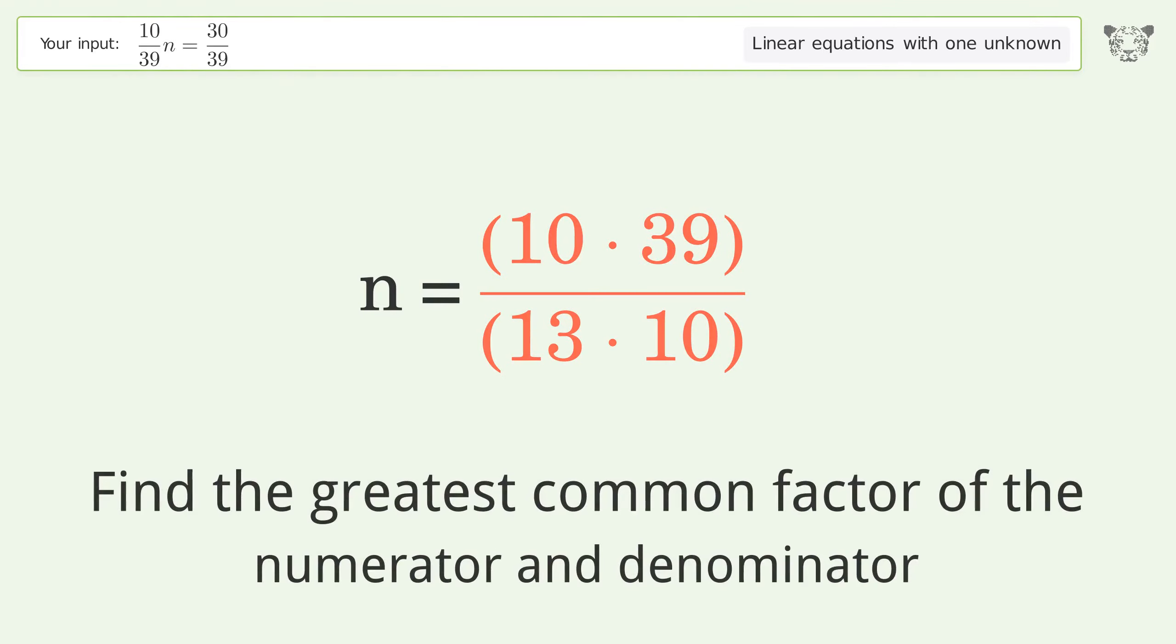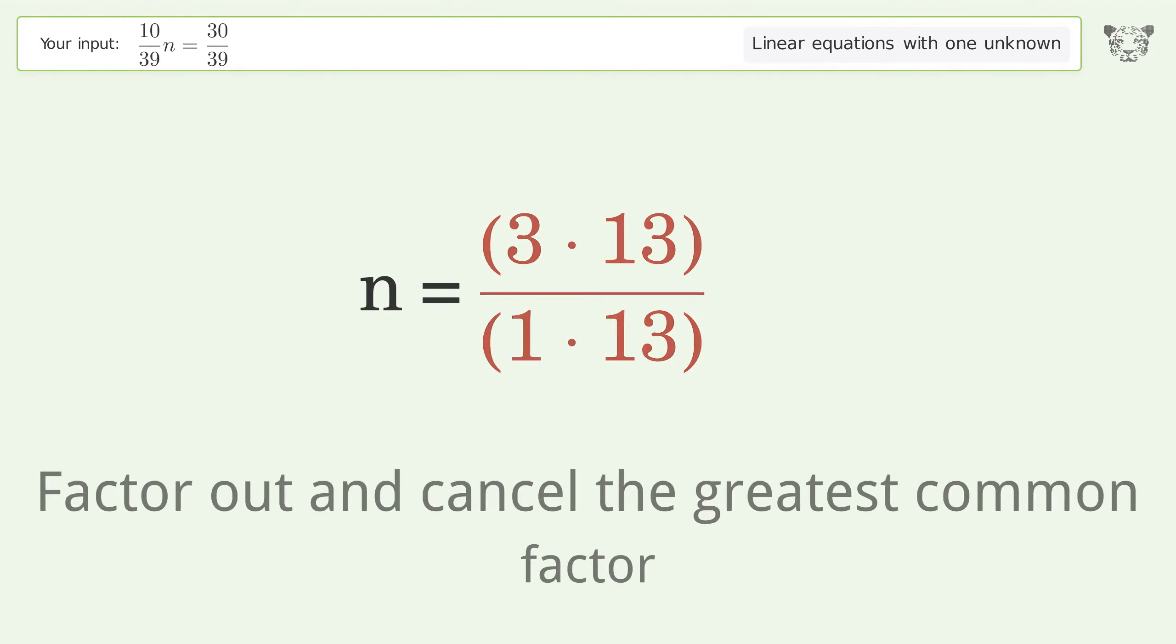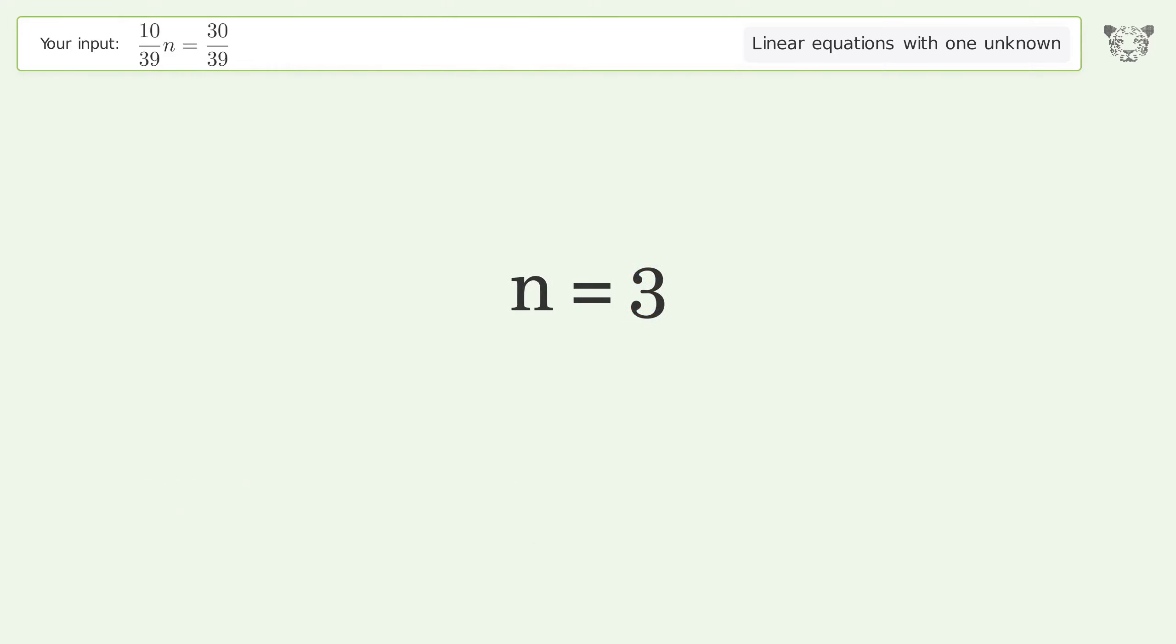Find the greatest common factor of the numerator and denominator. Factor out and cancel the greatest common factor. And so the final result is n equals 3.